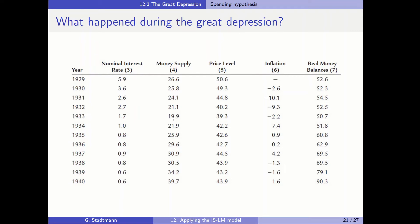This is also completely against our intuition, which would recommend an expansionary monetary policy. The price level decreased — so the price level corresponds with the inflation column. Inflation is negative, so the US economy is experiencing a phase of severe deflation. Goods prices decreased by about 10% in 1931 and 1932.